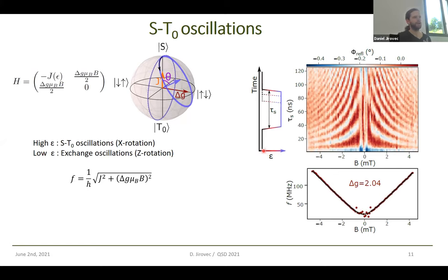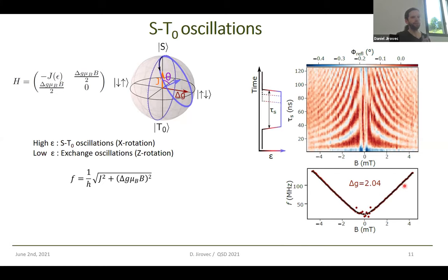What we did first is just look at singlet-triplet oscillations. The pulse we apply is very simple — a square pulse at maximum epsilon — and then we let the system evolve freely. If it returns as a singlet, it will tunnel; if it's a triplet, Pauli spin blockade prevents tunneling, and you can observe this oscillation in the signal. What you should notice is that the oscillation frequency goes above 100 megahertz — but importantly, the magnetic field is at only 4 millitesla. So we have a G-factor difference of 2, which is 1000 times bigger than what you would see in electrons in silicon. This qubit is going extremely fast at very, very low fields.